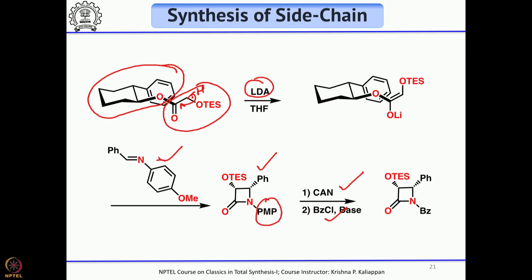Overall, in Nicolaou's total synthesis, he cleverly used two key reactions: an intermolecular Diels-Alder reaction to construct the A ring and an intramolecular Diels-Alder reaction to construct the C ring. Then McMurry coupling was used to make the highly strained 8-membered B ring. All other steps are standard functional group transformations, and he successfully completed the total synthesis of Taxol.